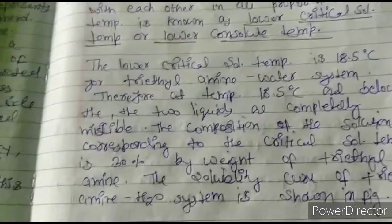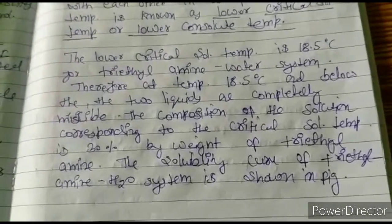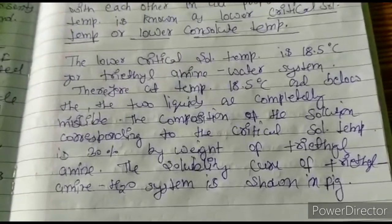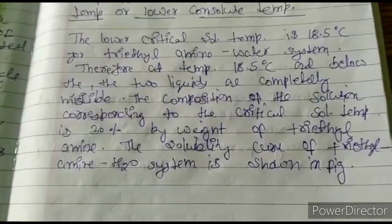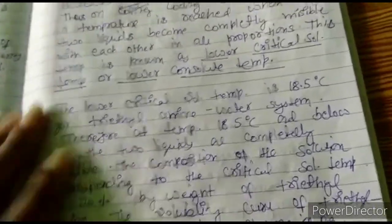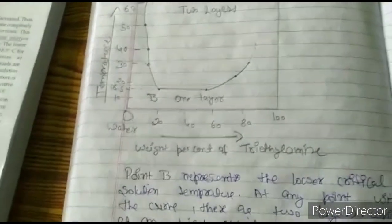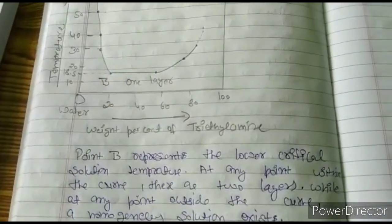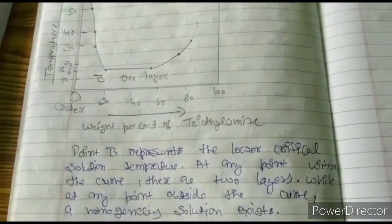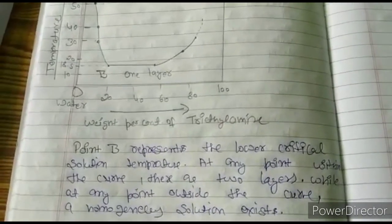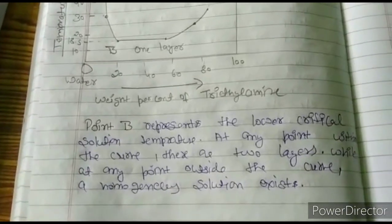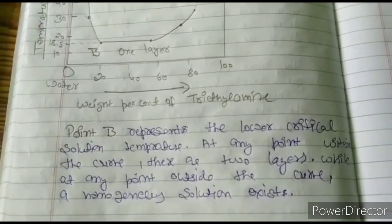The composition of the solution corresponding to the critical solution temperature is 30 percent by weight of triethylamine. The solubility curve of the triethylamine-water system is shown in the figure. Point B represents the lower critical solution temperature. At any point within the curve there are two layers, while at any point outside the curve a homogeneous solution exists.